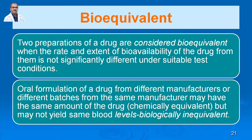For example, if tetracycline is given IV and then intramuscularly, and the rate and extent of bioavailability from both routes are not significantly different, then they have very good bioequivalence. Oral formulations of a drug from different manufacturers or different batches from the same manufacturer may have the same amount of drug.